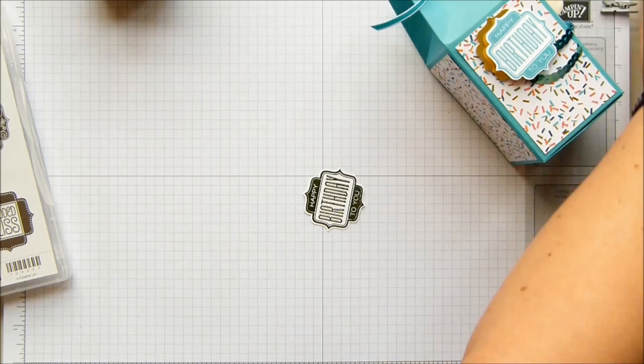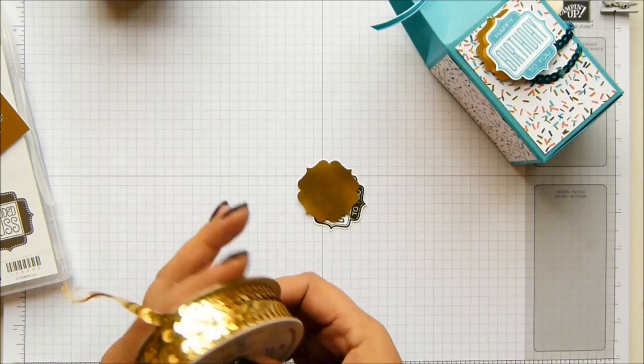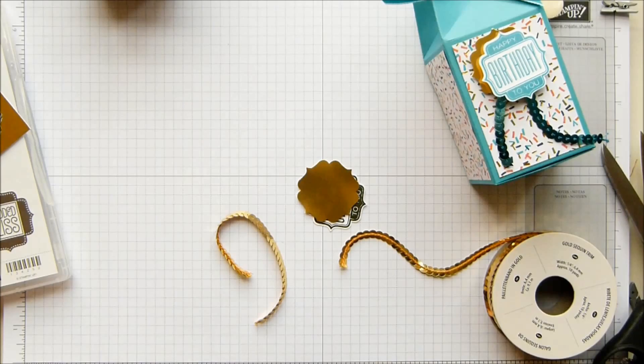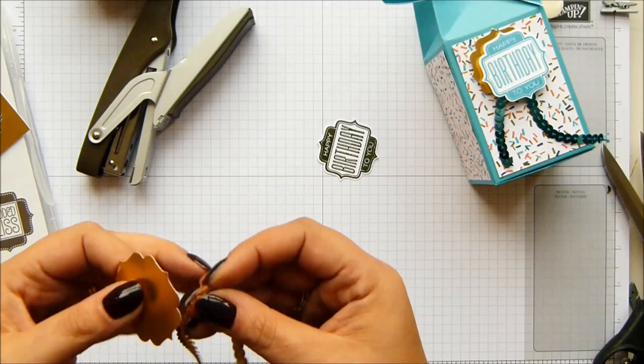I've got some gold foil. I used the Bermuda Bay sequins on one, I'm going to go with the gold ones this time. Just hack off a bit, trim off any edges if you've pulled off individual sequins, which is something I do. Then grab your stapler and staple this behind the gold panel. Put your stapler wherever it's comfortable.